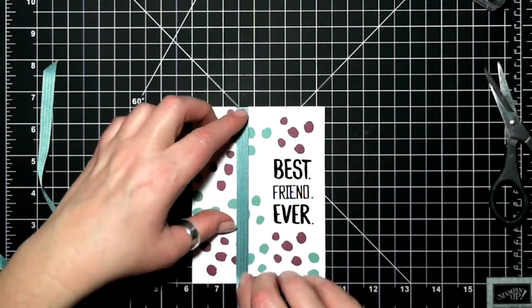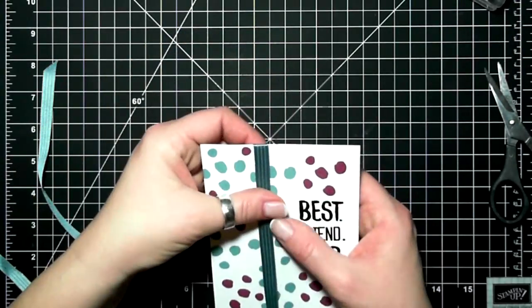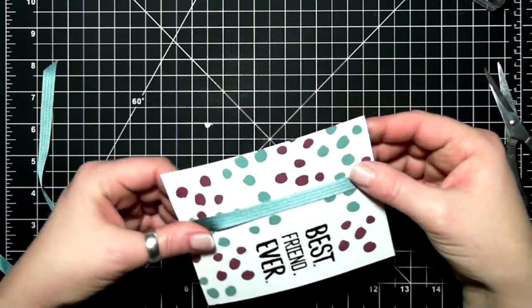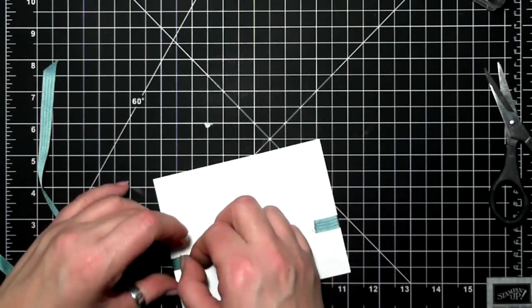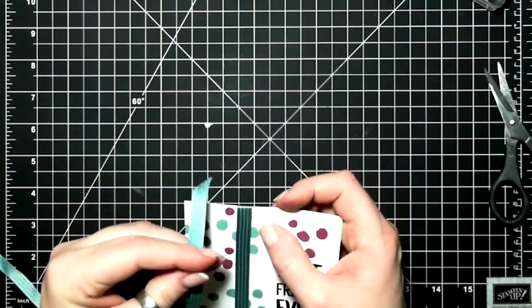I'm adding some Lost Lagoon ribbon. I don't use ribbon very often, and when I do it's usually in two strips. I don't know why, it's just for me I dig it.